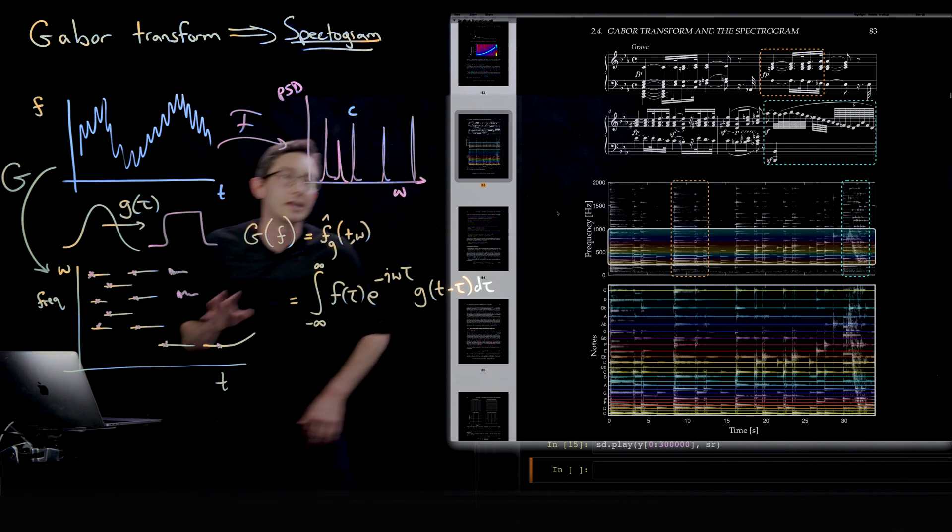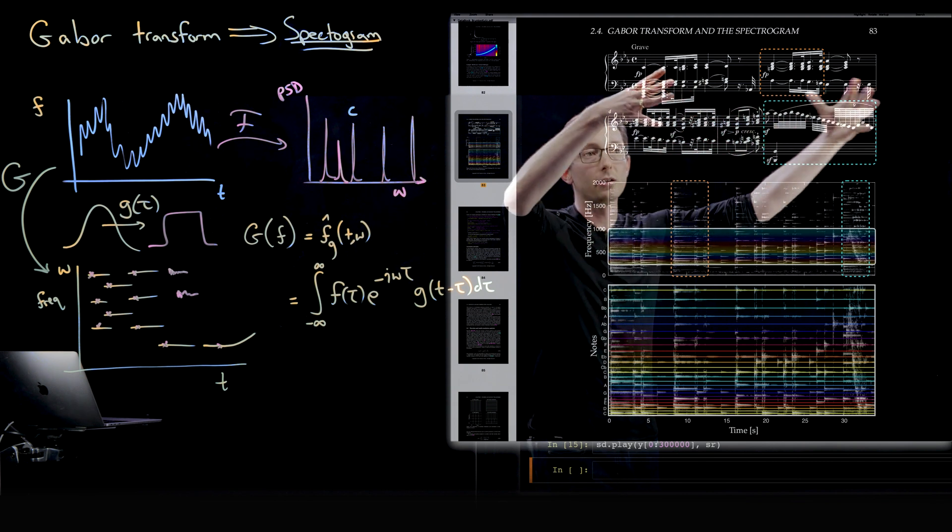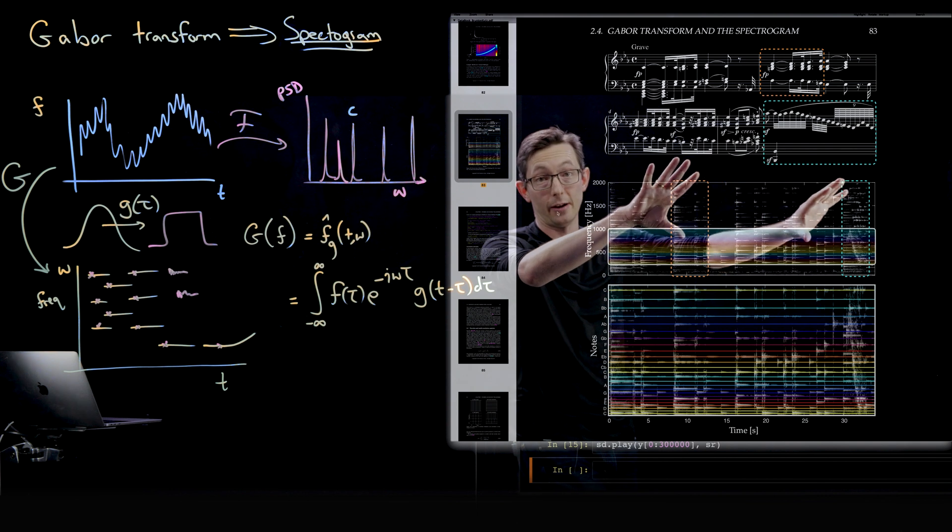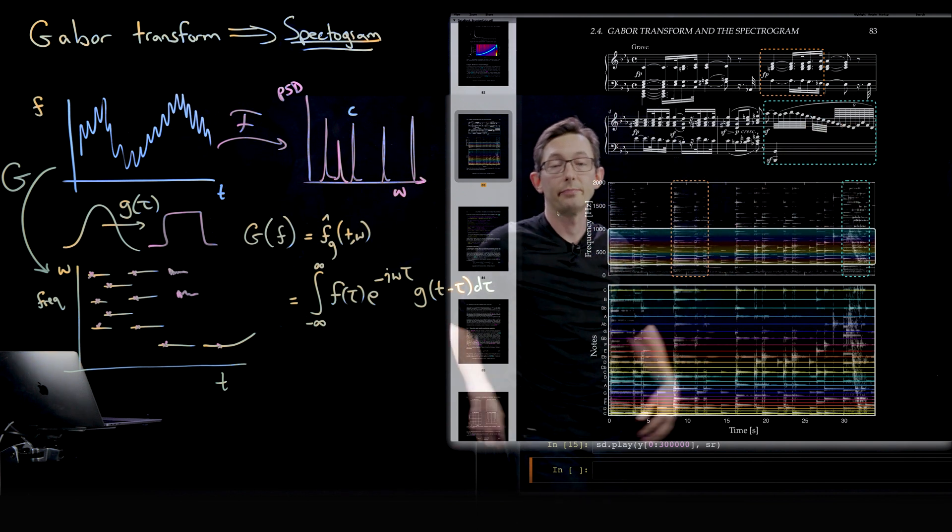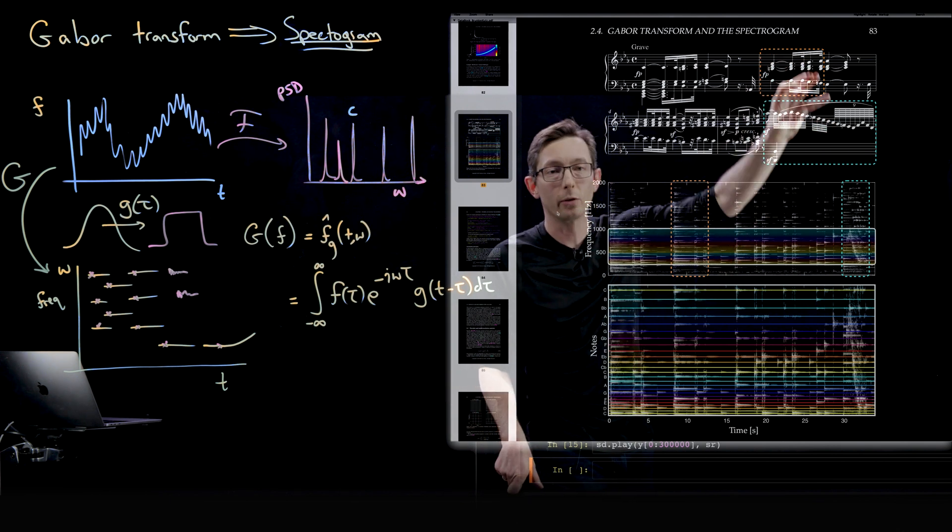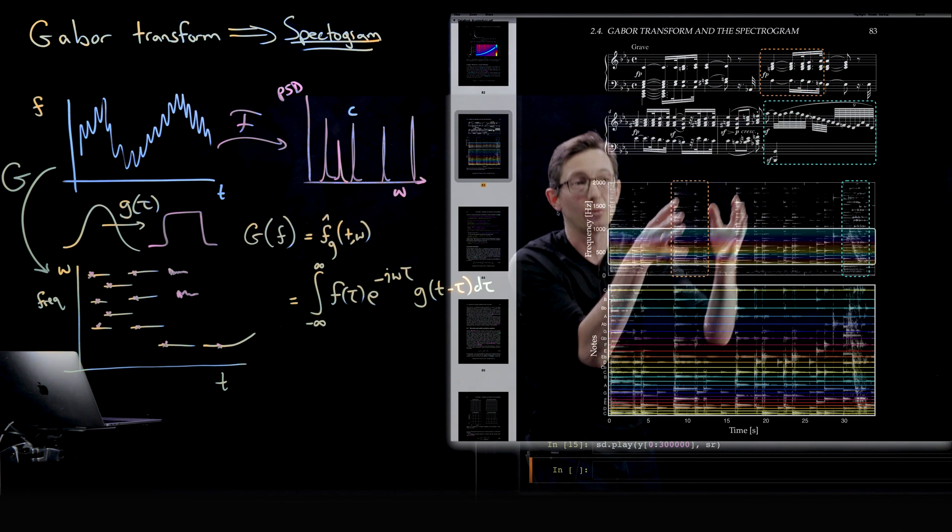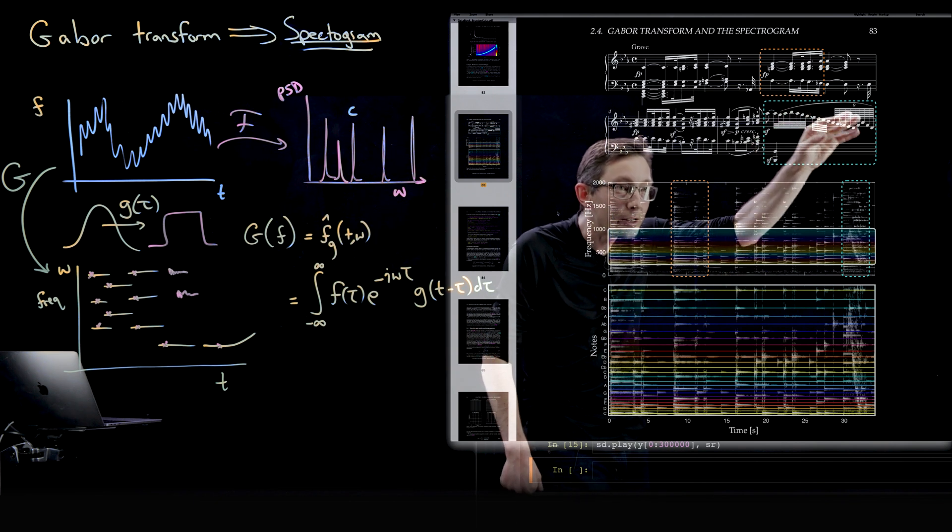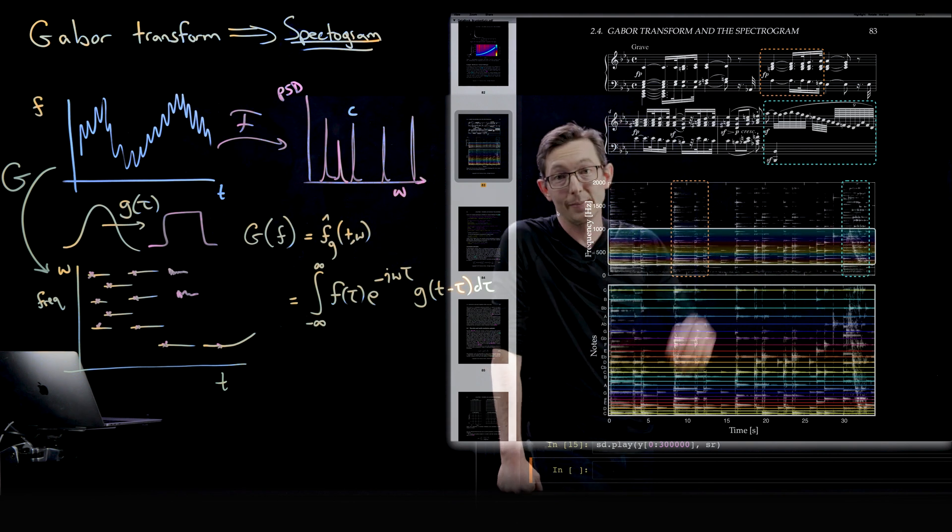And this is one of my favorite diagrams we made in the book, which is essentially taking the first two bars of the sonata up here and then plotting below the spectrogram of the first 40 seconds of these first two bars. And for example, you can take these boxed regions, these orange and blue boxed regions, and you can see what they look like in sheet music and what they look like in the spectrogram. So for example, here, this progression down here, you can actually see it in the spectrogram.